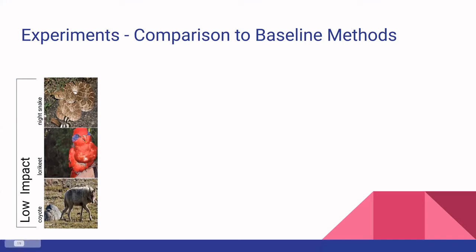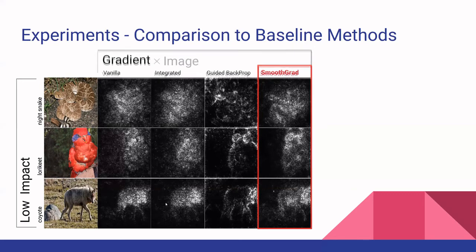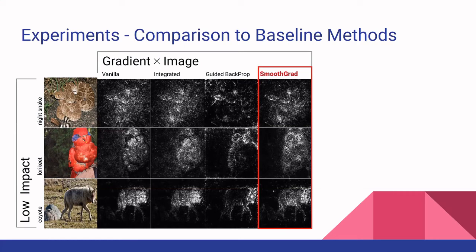These images show where SmoothGrad has lower impact — they don't have uniform backgrounds, such as the lorikeet, the snake, and the coyote, which all have backgrounds where textures vary. In this case, guided backpropagation actually performs best when an object is surrounded by a non-uniform background. SmoothGrad still performs better than vanilla and integrated, having a more coherent sensitivity map. When you multiply the gradient by the image, you can clearly see how much sharper guided backpropagation is for non-uniform backgrounds.